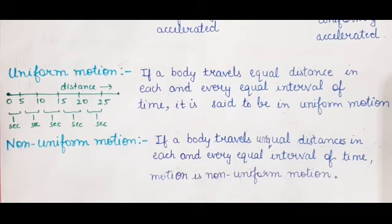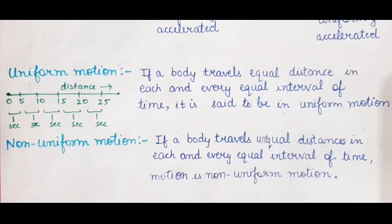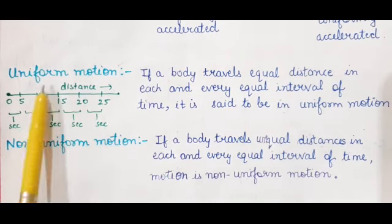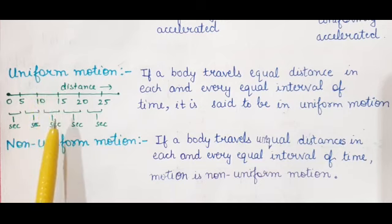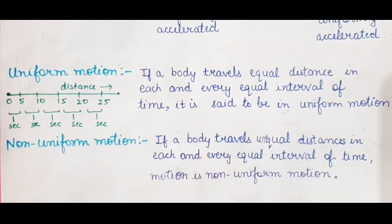What are examples of non-uniform motion? When a car is moving on a crowded street, or a person is jogging in the park — those are non-uniform motion, because unequal distances are covered in each equal interval of time. In uniform motion: equal distance in each and every equal interval of time. In non-uniform motion: unequal distance in each and every equal interval of time.